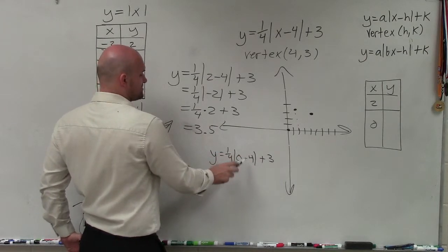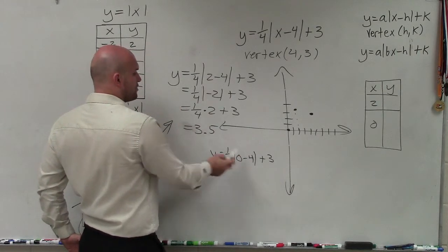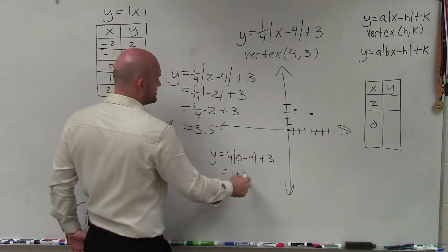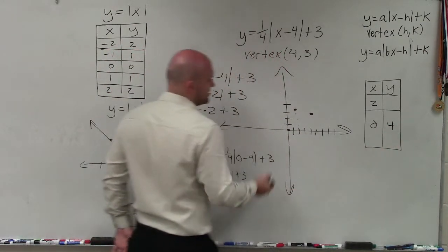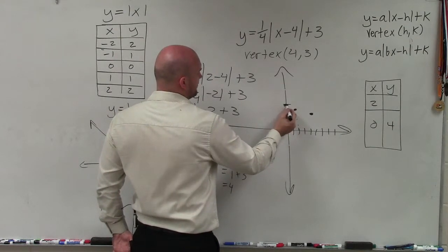So here I have 0 minus 4 is negative 4. Absolute value of negative 4 is 4. 4 times one-fourth is equal to 1 plus 3, which equals 4. So when x equals 0, that means y equals 1, 2, 3, 4.